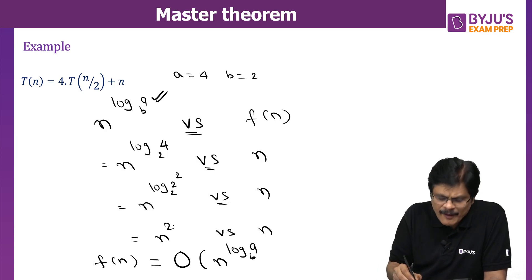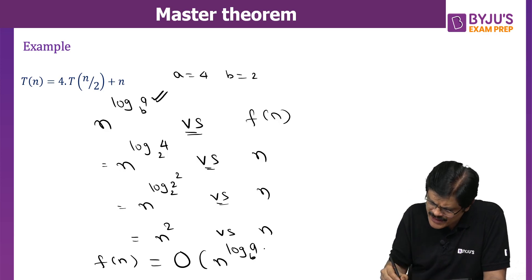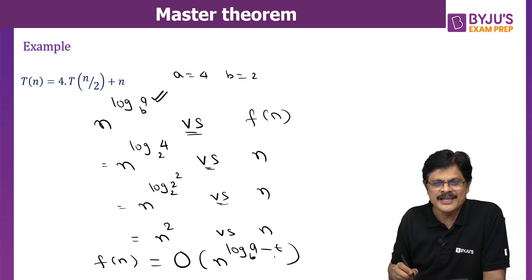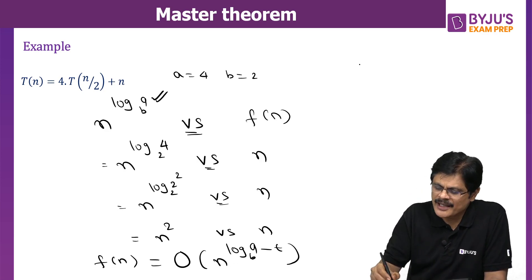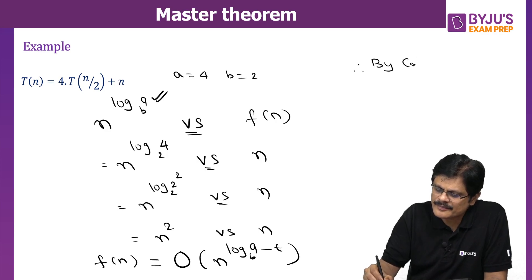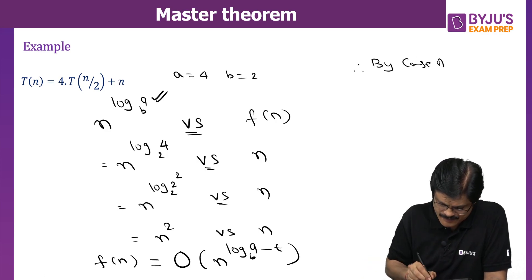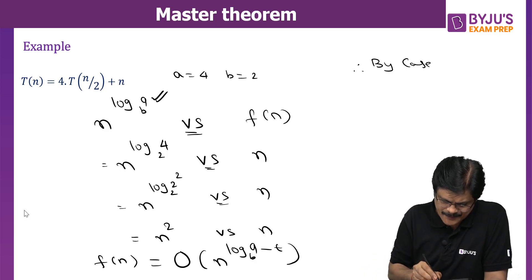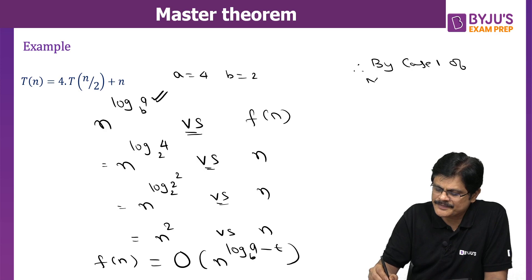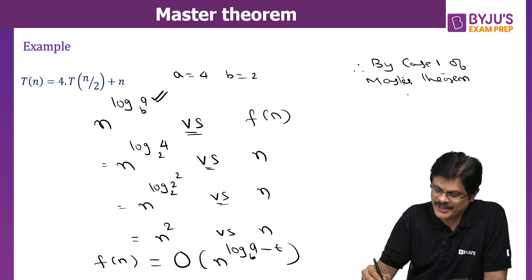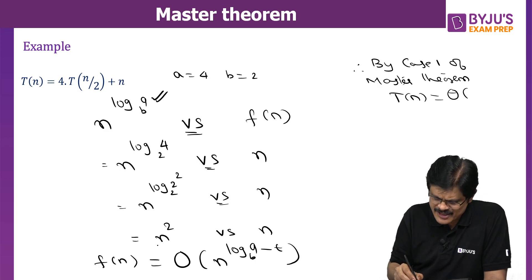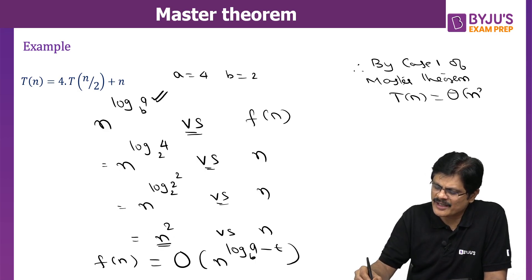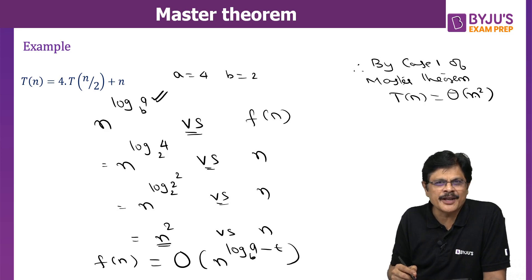Not only that, even from this power of 2, if you subtract a small constant ε, N² still dominates. Therefore F(n) is O(n^(log_B A − ε)). Therefore, by Case 1 of Master Theorem, the conclusion is that T(n) is Θ(n^(log_B A)), which simplifies to Θ(N²).